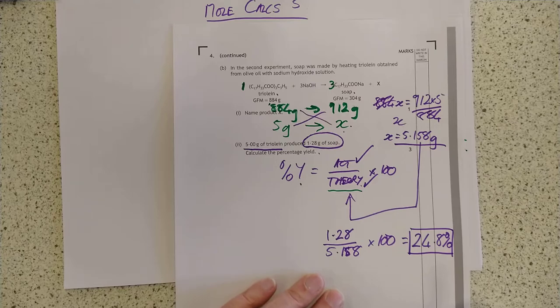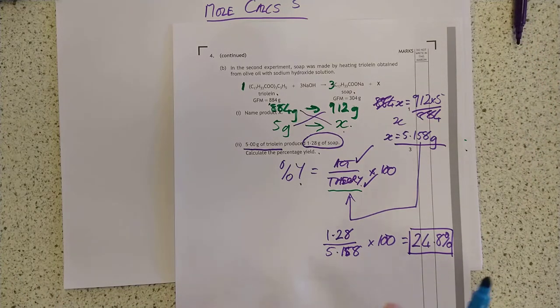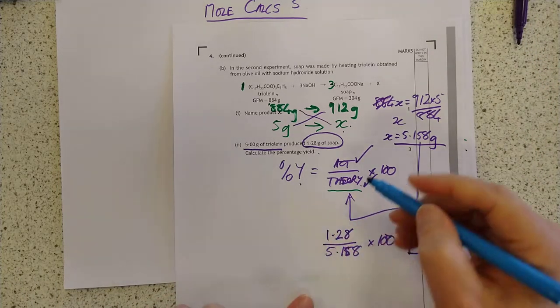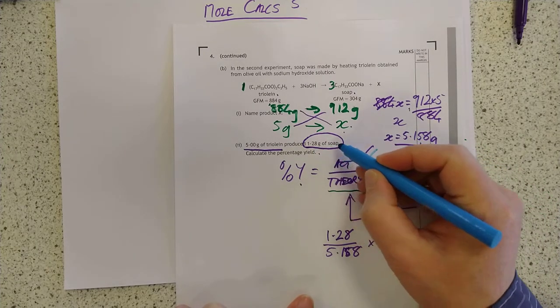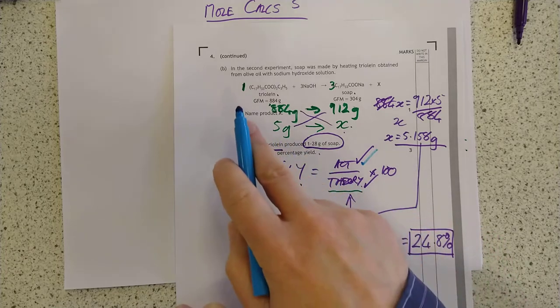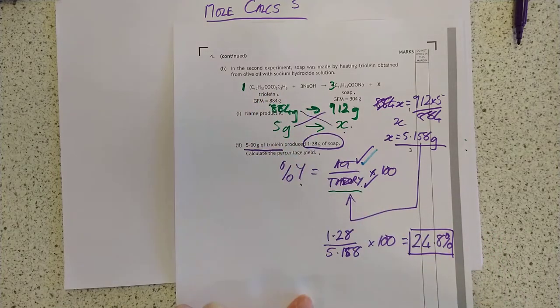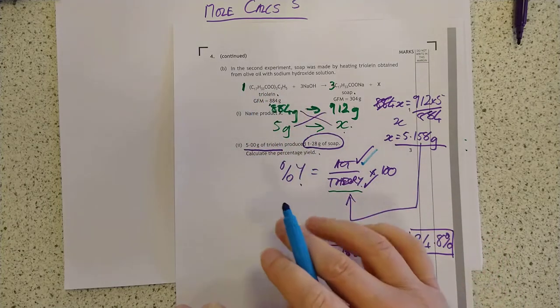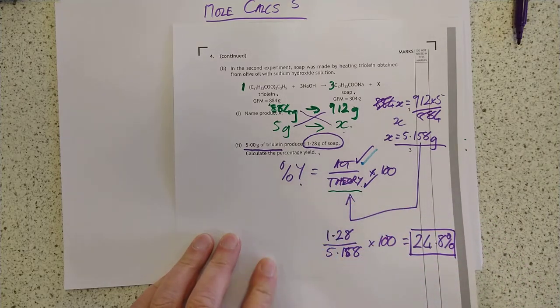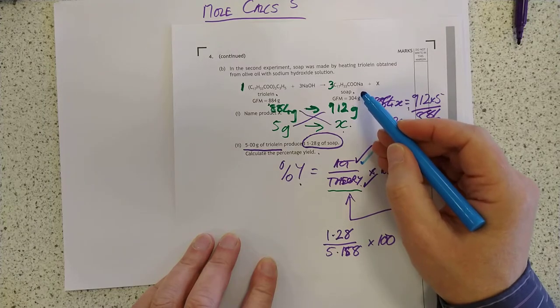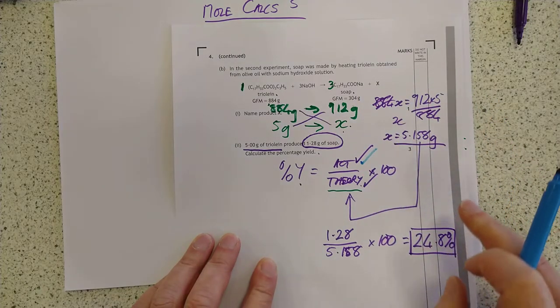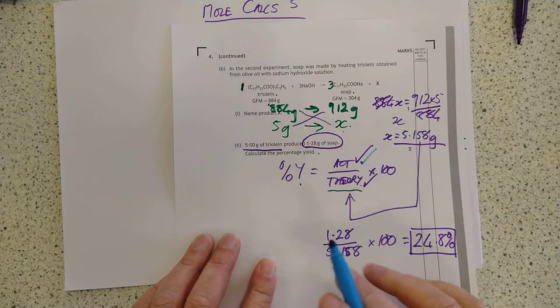We're not done with this one at all. You said you were going to do the moles method. No problemo. Let's do the moles method for those of us who prefer moles. This remains exactly the same, the actual, because it's just a mass. It's 1.28 grams of soap. It doesn't change the theory.